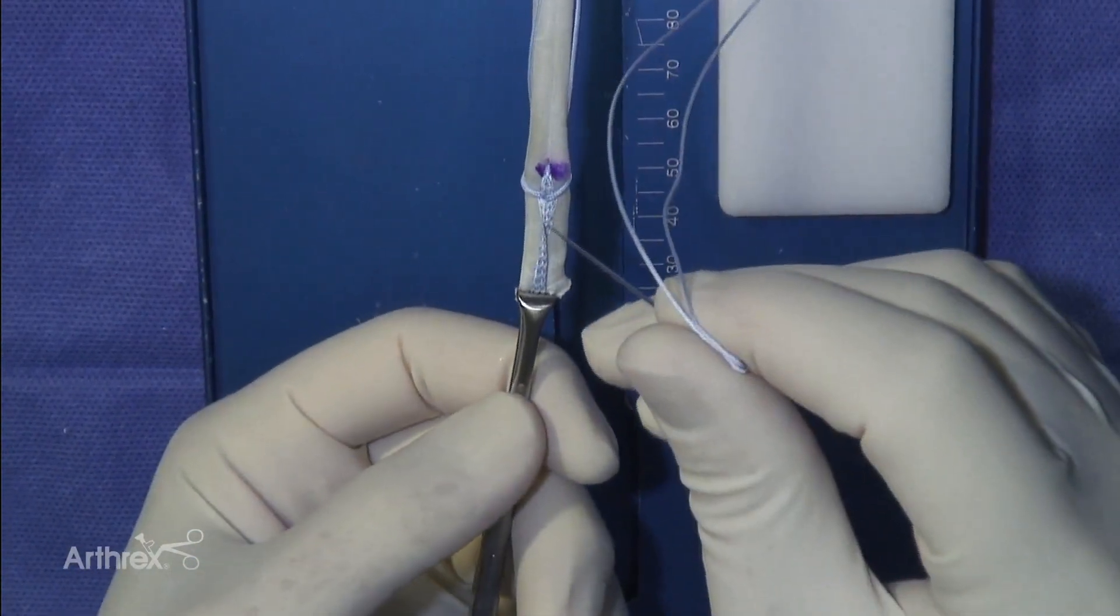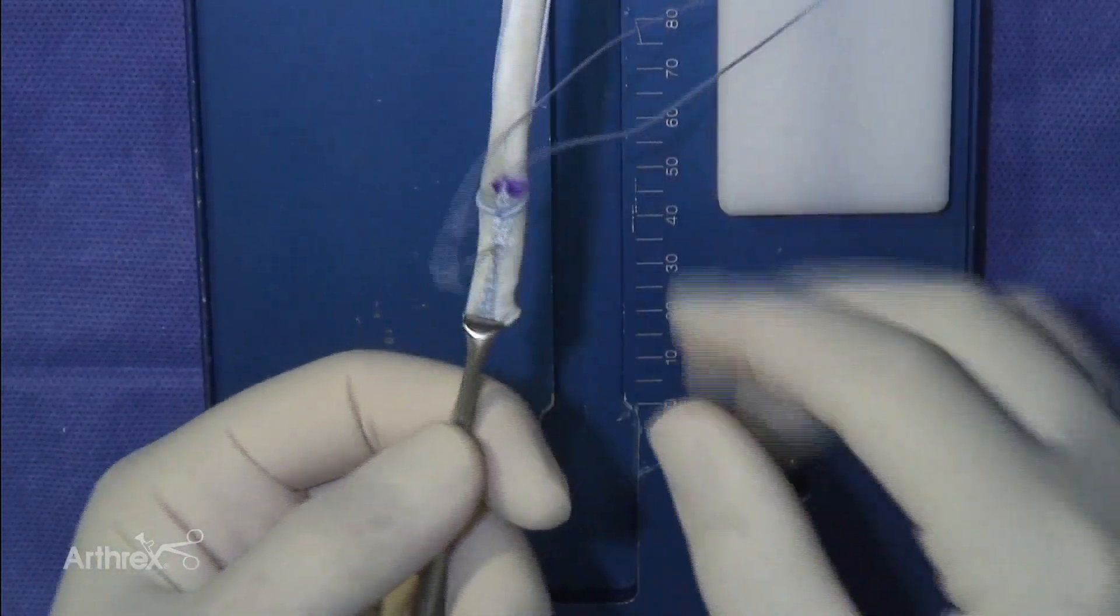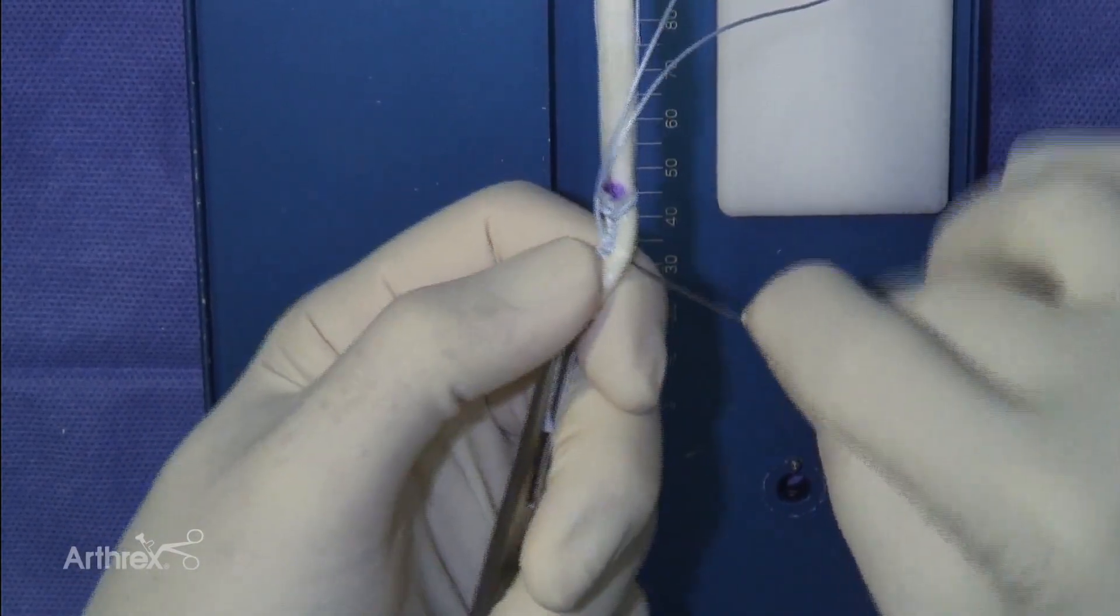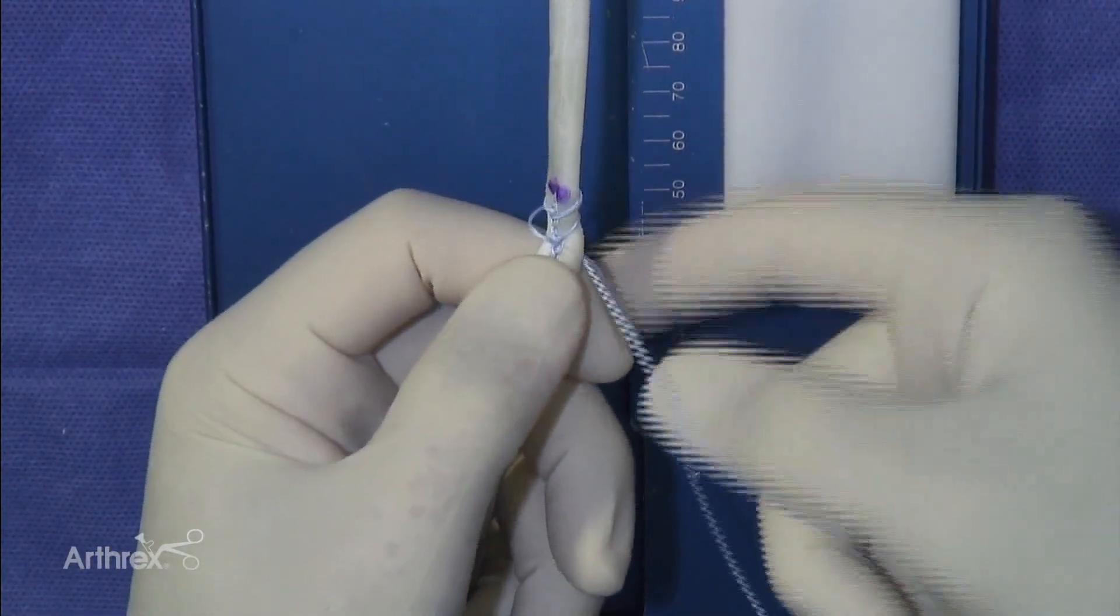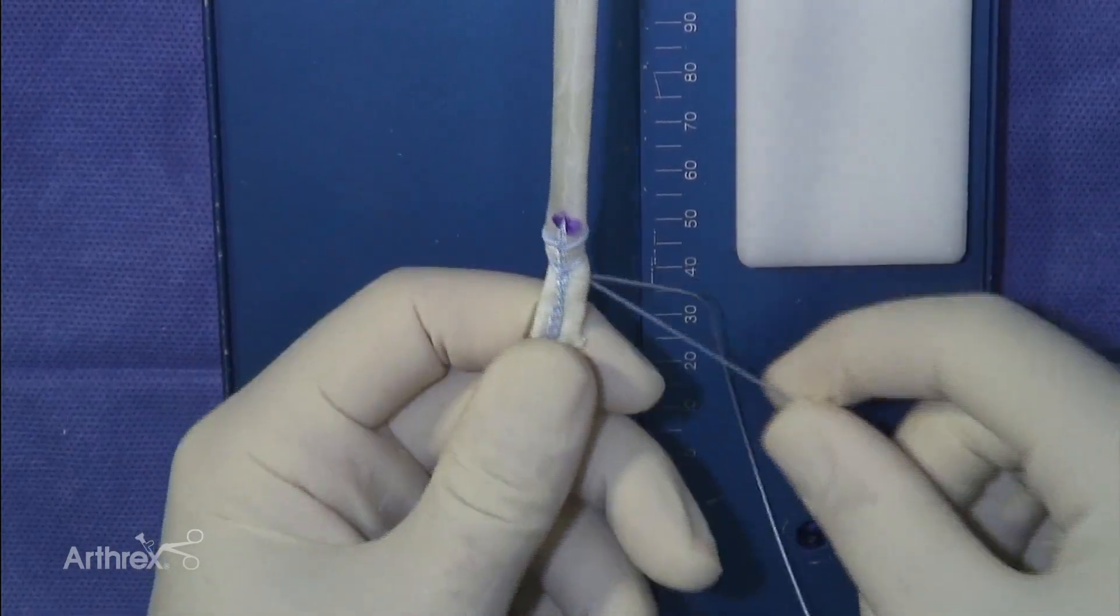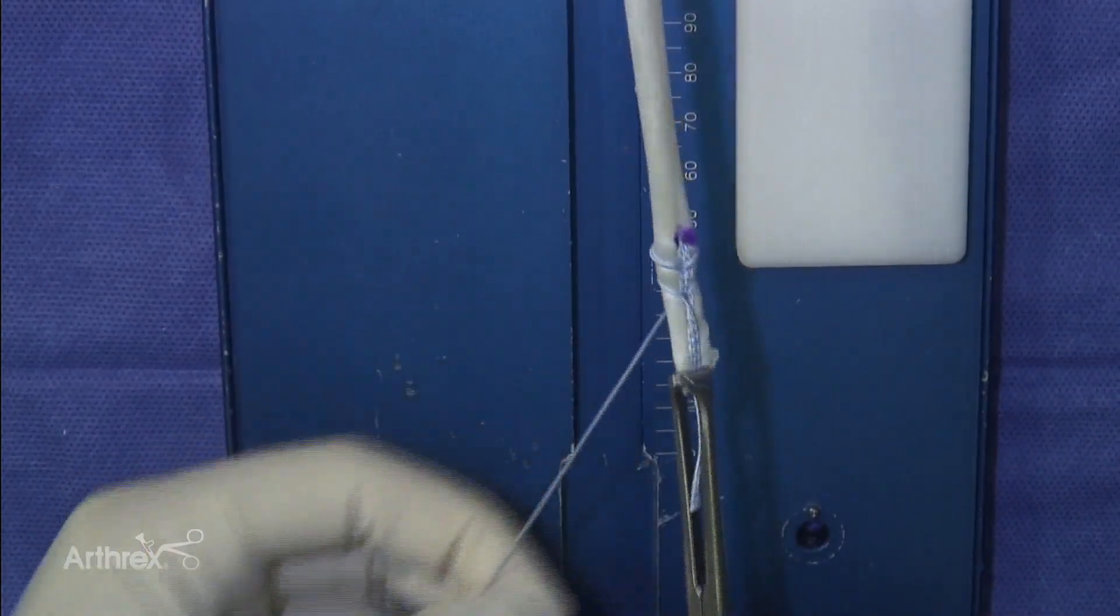Repeat the stitch pattern by again spreading out the limbs of the fiber loop and passing the needle through the fiber tag and graft distal to the previous stitch. Pull each strand of the fiber loop suture firmly again to tension the stitch.